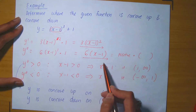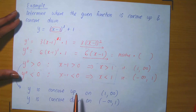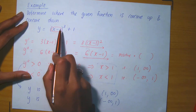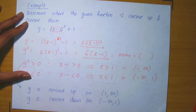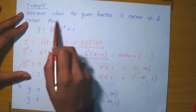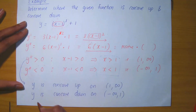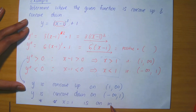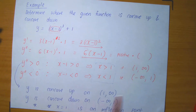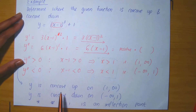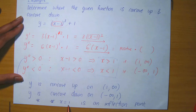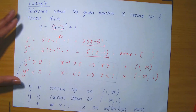Observe that the concavity changed at x = 1, moving from concave down to concave up — so we have a change in concavity. Is this function continuous at x = 1? Yes, because this is a polynomial. So x = 1 is an inflection point. By evaluating the second-order derivative and determining on which intervals it is positive or negative, we determined where the function was concave up and concave down, and based on the change of concavity we were able to determine that x = 1 is an inflection point of that function.